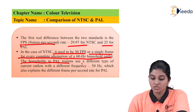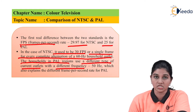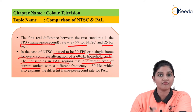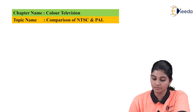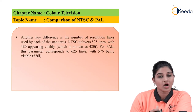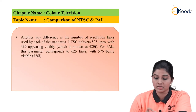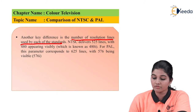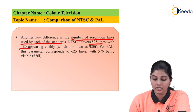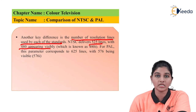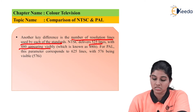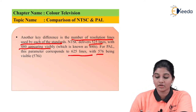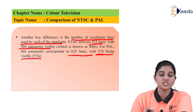Households in the PAL region use a different current outlet with a frequency of 50 hertz, and therefore PAL provides 25 frames per second. Another key difference between NTSC and PAL is the number of resolution lines used by each standard. In case of NTSC, 525 lines are used with 480 operating visibly, which is known as 480i. In case of PAL, the number of lines is 625, and out of those 625 lines, 576 are visible, called 576i.